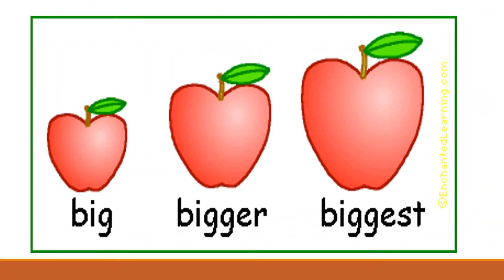Sometimes we make a comparison in adjectives. Look at this image — there are 3 apples. One is big, the second is bigger, and the third is the biggest. Notice we have made some changes to the word 'big' by adding -er and -est to it. In the next few slides we are going to learn how we do these changes.